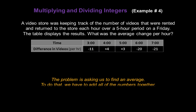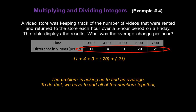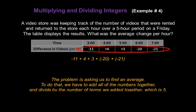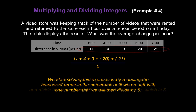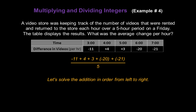The problem is asking us to find an average. To do that, we have to add all of the numbers together. So we're going to add negative 11 plus 4 plus 3 plus negative 20 plus negative 21. And to find the average, don't forget to divide by the number of terms we added together — in this case, 5. We start solving this expression by reducing the number of terms in the numerator until we're left with only one number that we can then divide by 5. Let's solve the addition in order from left to right, starting with negative 11 plus 4.